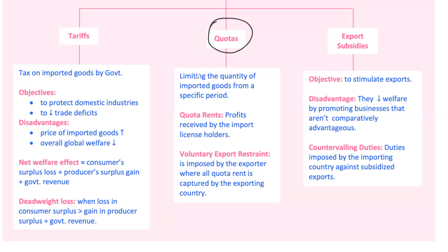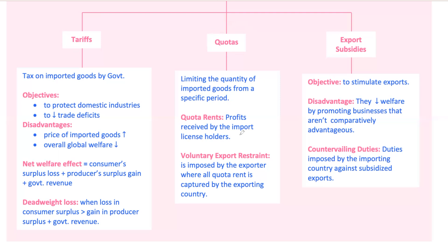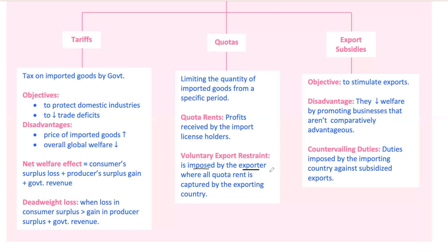Quotas limit how much of a good can be imported. They usually make foreign producers raise their prices because they can't supply as much. This leads to what we call quota rents, which are extra profits for those holding import licenses. Quotas can result in more welfare loss than tariffs unless the government captures the quota rents — with tariffs the government collects the extra money, but with quotas it's the license holders who benefit. Voluntary export restraints are similar to quotas but imposed by exporters, and they typically cause more harm to the importing country than quotas do.